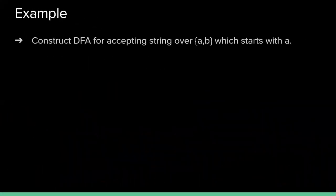Now let's start with another example. Here, construct DFA for accepting string over {a,b} which starts with a. Here the input symbols are a and b.